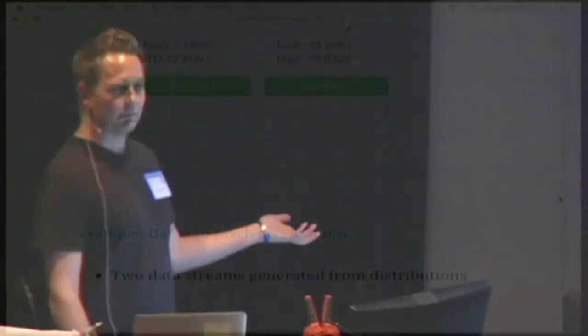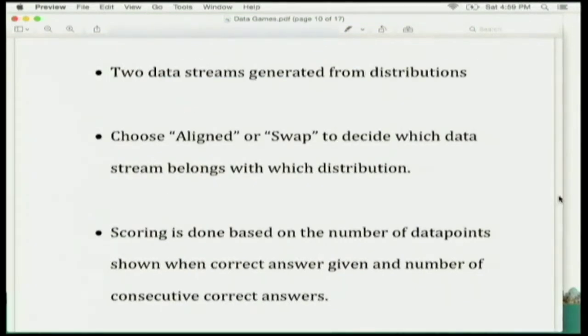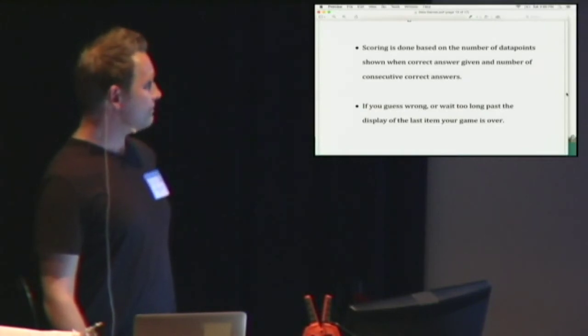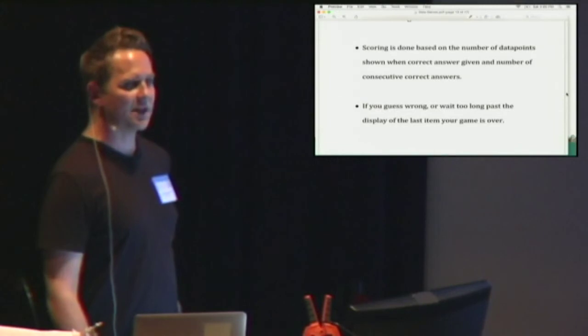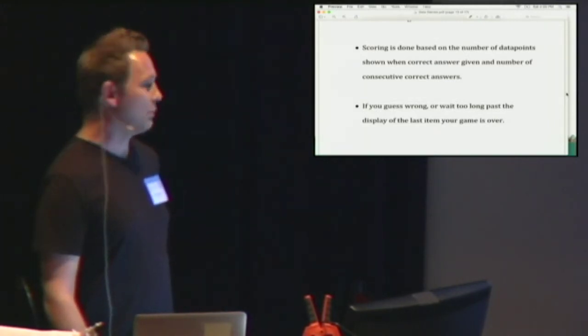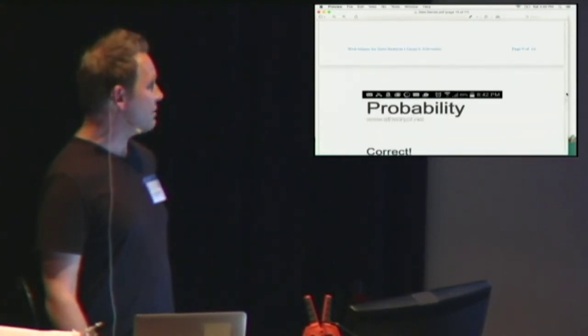A novice might not know that — they have to figure that out. So, line swap. The basic scoring is just: if you make the correct guess with fewer data points shown, you get more points. And if you make correct guesses after making a number of consecutive guesses correct, you get more points. If you guess wrong or wait too long, then your game is over.